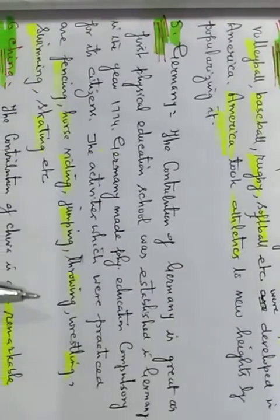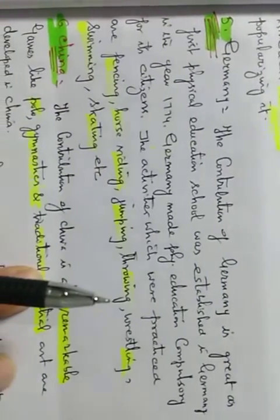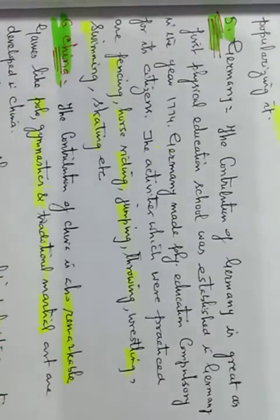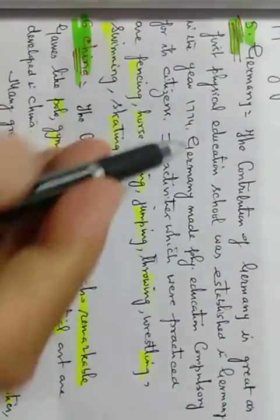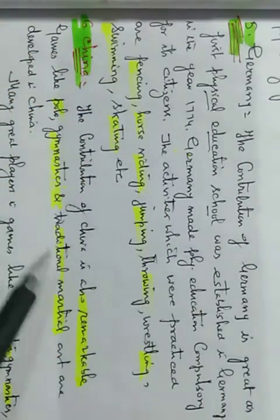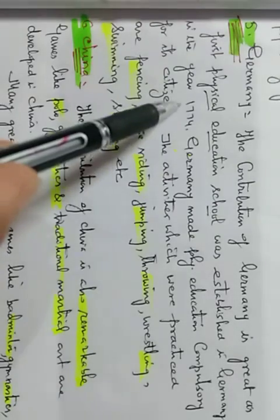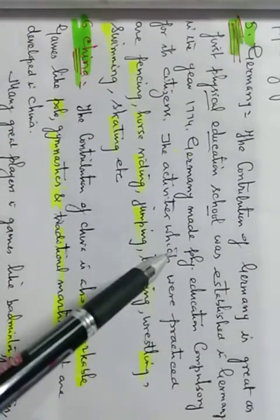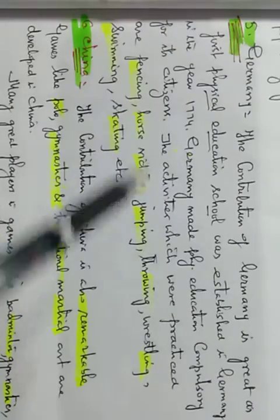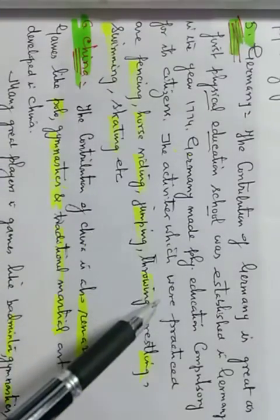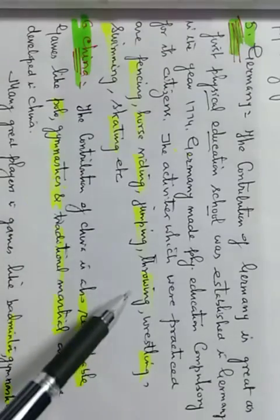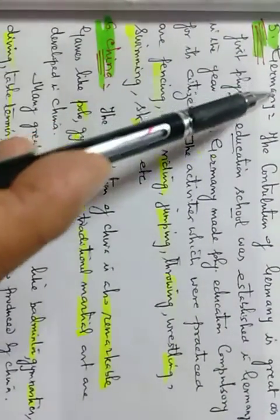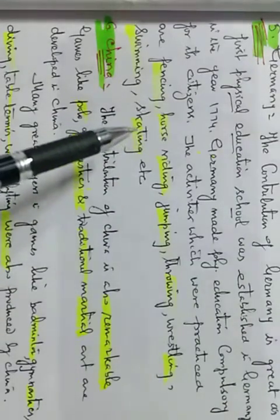The contribution of Germany is great, as the first physical education school was established in Germany in the year 1774. Germany made physical education compulsory for its citizens. The activities which were practiced are fencing, horse riding, jumping, throwing, wrestling, swimming, skating. This was the contribution of Germany towards development of games, towards developing physical activities in the form of games.